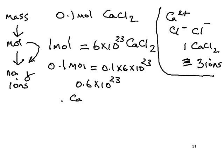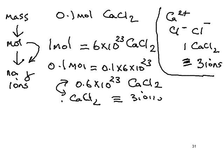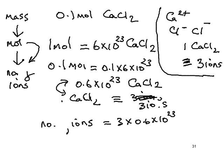Since one CaCl₂ is equivalent to three ions, we're going to have to multiply this figure by three. Putting these two facts together, the number of ions is going to be equal to 3 times 0.6 × 10²³, which is 1.8 × 10²³ ions in total. And that is our answer.